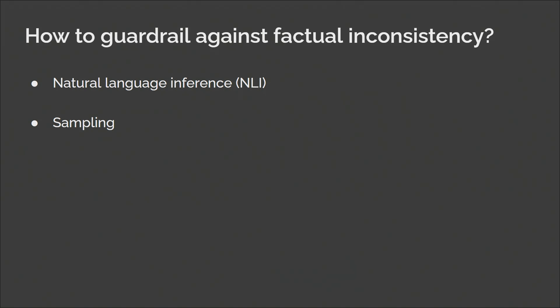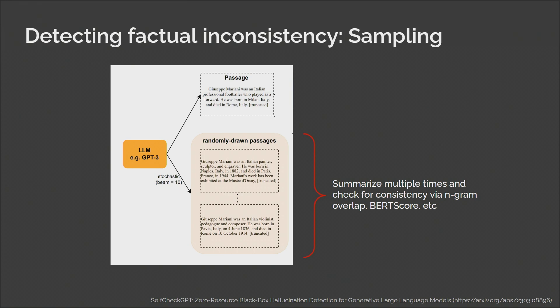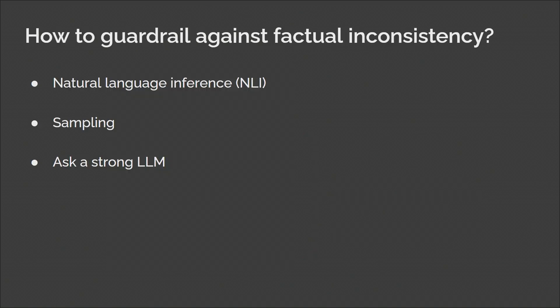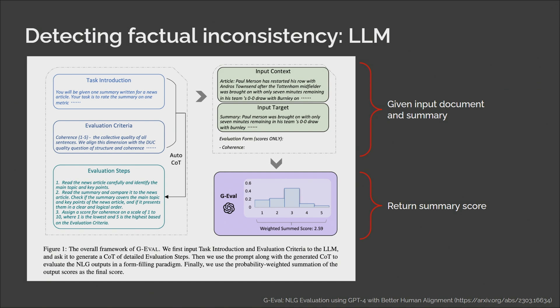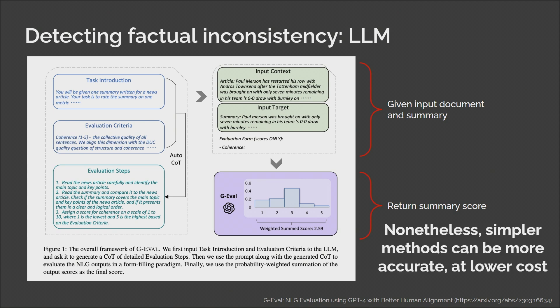Another approach is sampling. Given an input document, we generate a summary multiple times and check if those summaries are similar to each other — n-gram overlap, BERT score, et cetera. The assumption is that if the summaries are very different, they're probably not grounded on the context document and therefore likely hallucinating. But if they're quite similar, you can assume they're grounded effectively and therefore factual. The final approach is asking a strong LLM — given an input document and summary, get the LLM to return a consistency score. However, in the case of factual consistency, simpler methods can outperform LLM-based approaches at far lower cost. So try to keep things simple if you can.